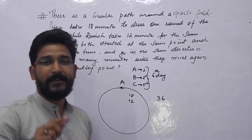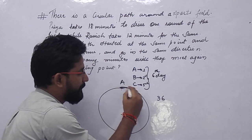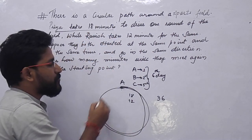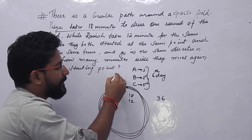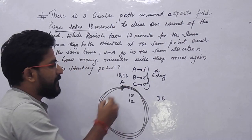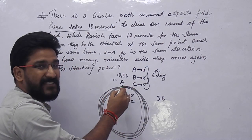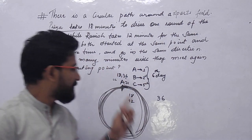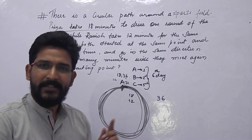So in 36 minutes, they will meet at the starting point again. The person taking 18 minutes completes rounds at 18 and 36 minutes. The person taking 12 minutes completes rounds at 12, 24, and 36 minutes. So at 36 minutes, both are back at the starting point together. The LCM of 12 and 18 is 36.